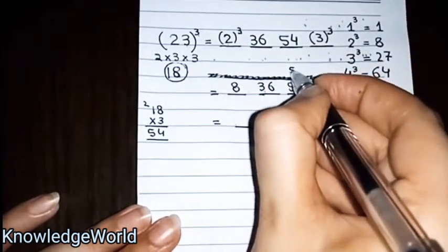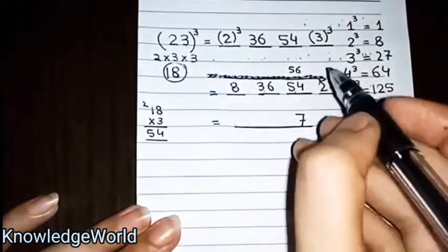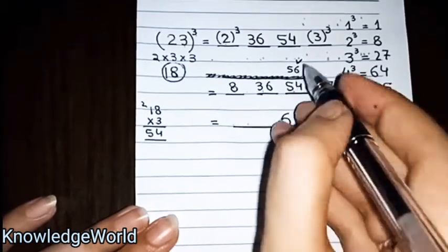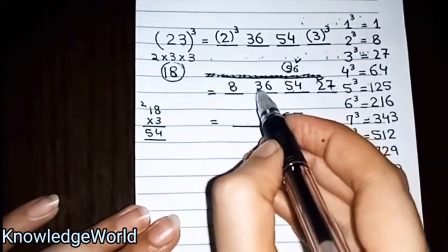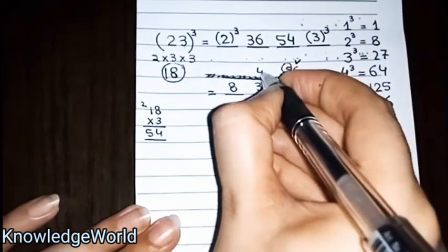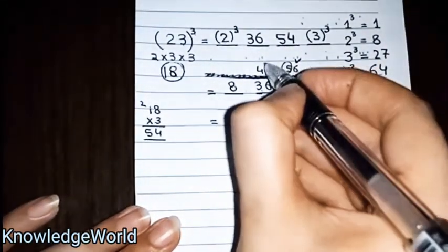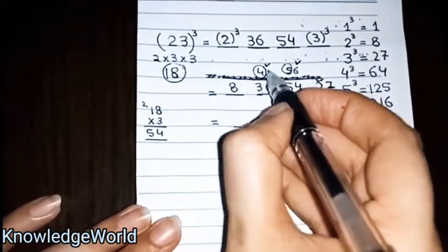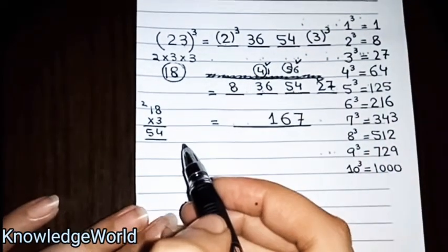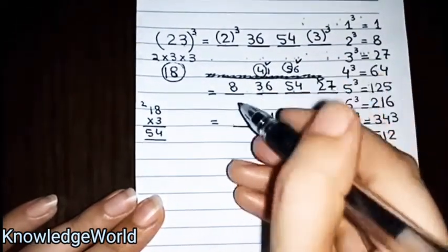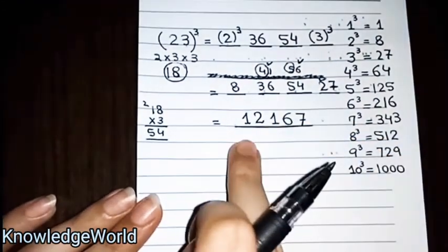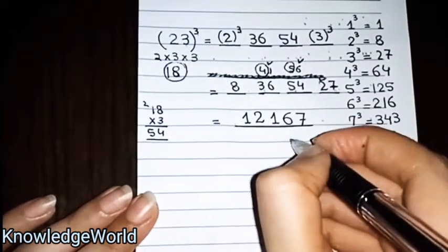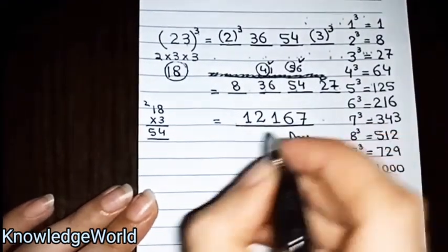We add 54 plus 2, which gives 56. Unit place is 6. The remaining 5, we add to 36. 36 plus 5 equals 41, unit place is 1. The remaining 4, we add to 8, which gives 12. So the answer is 12167. You can check in your calculator that 23 cubed is your required answer. Let's see another cube example.